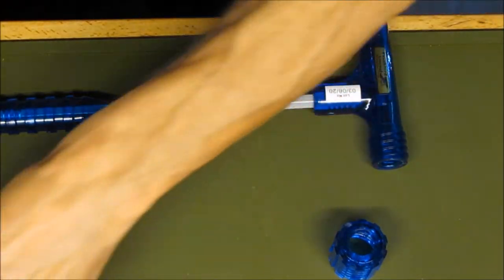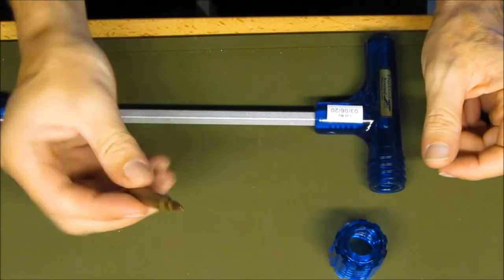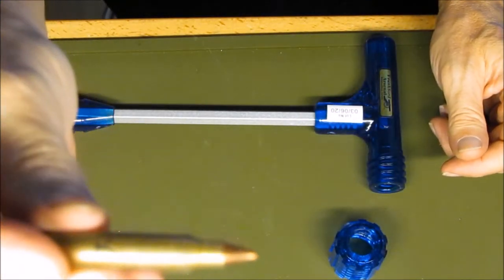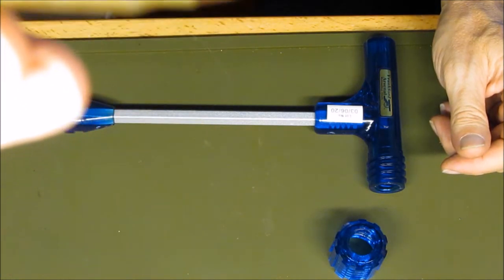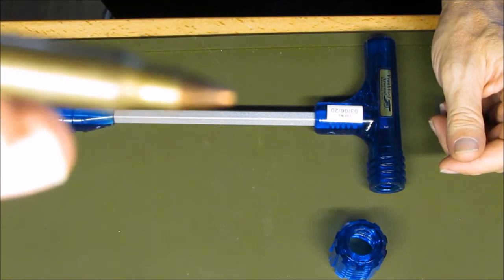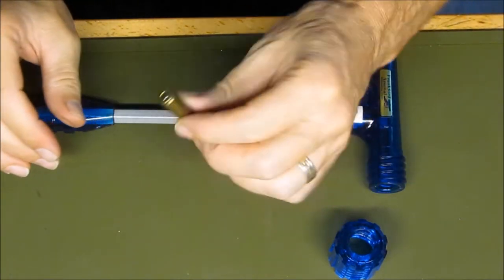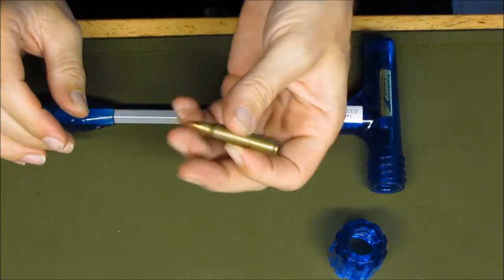And to show you how this works, we're going to be using this 223 round where the bullet is actually pushed back up in the casing a little bit, so we need to remove that so we can still use this casing and the bullet.